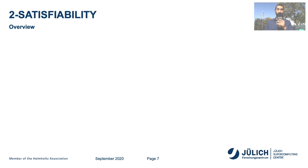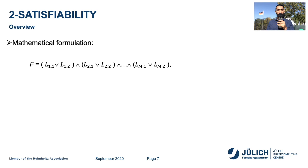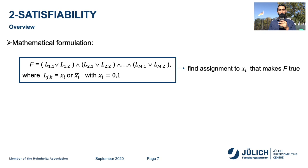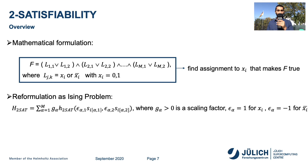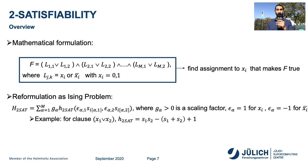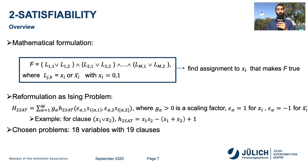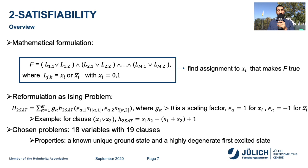The next problem we benchmark is 2-Satisfiability. It is a computational problem of assigning values to variables, each of which has two possible values, such that we satisfy certain constraints. Mathematically, our task is to find an assignment to x that makes the function true. To implement this problem on a quantum device, we need to reformulate it as an annealing problem. The annealing Hamiltonian is given by the sum of m Hamiltonians, each multiplied by its own corresponding scaling factor. As an example, consider the clause x1 ∧ x2. The problems we have chosen consist of 18 variables with 19 clauses, and have a known unique ground state and a highly degenerate first excited state.